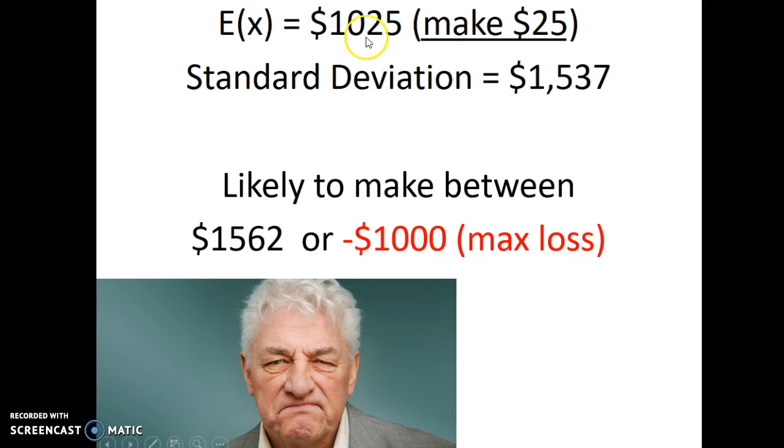This is your expected value. But it gets pretty spread out along here between either making more, 1,562, which, remember, is just the 562 after you pay. Or, because this goes into the negative, you actually could make, this is your maximum loss of 1,000.